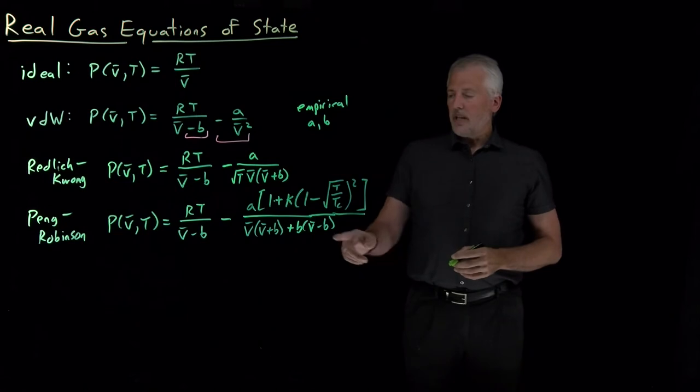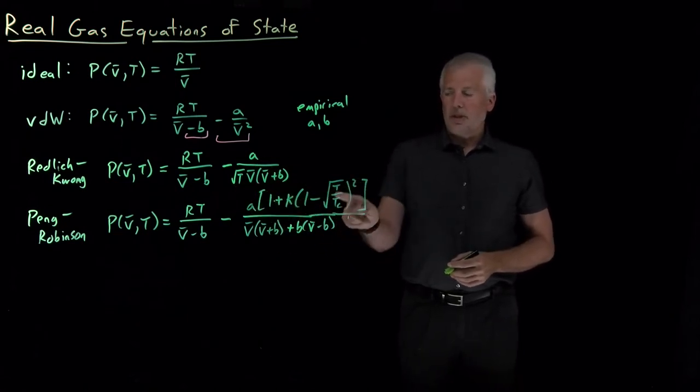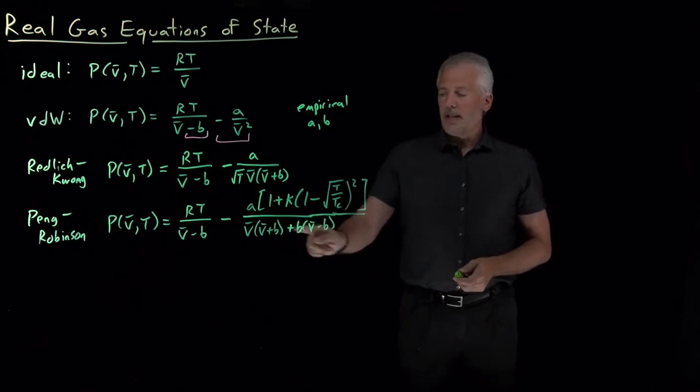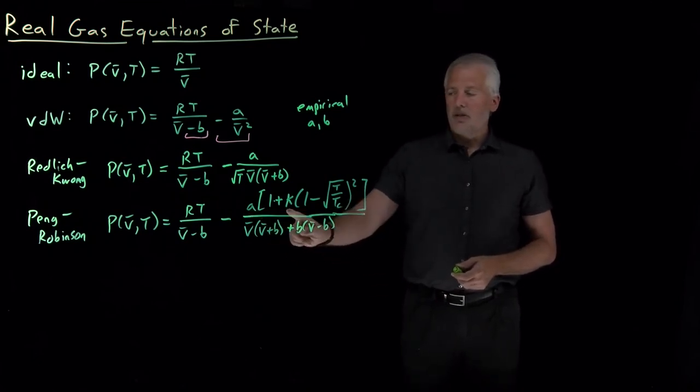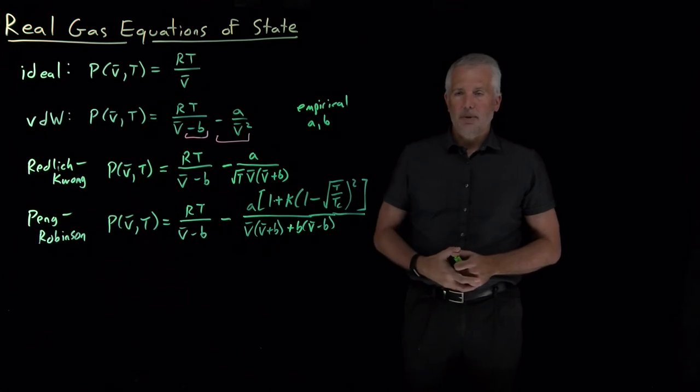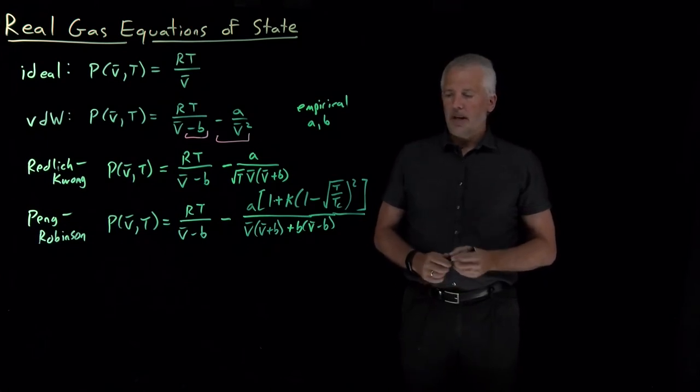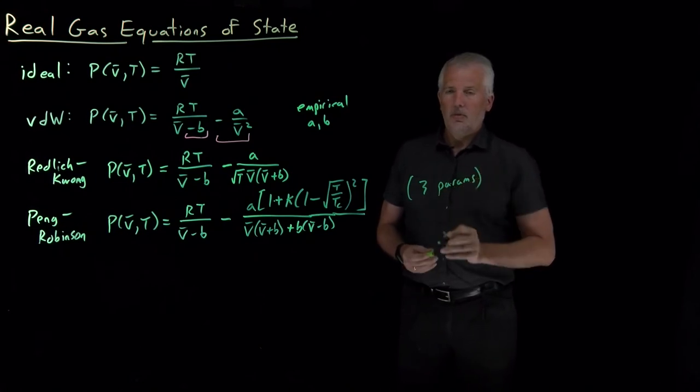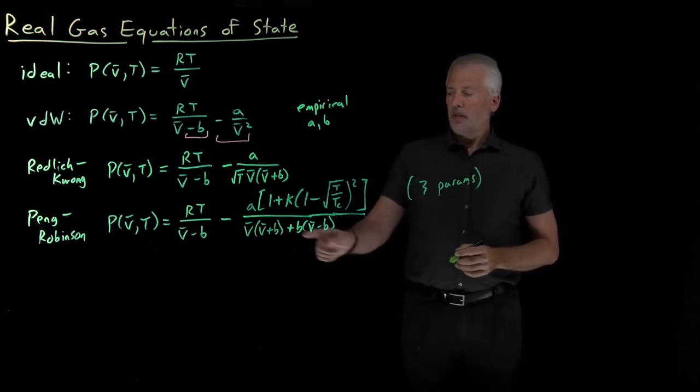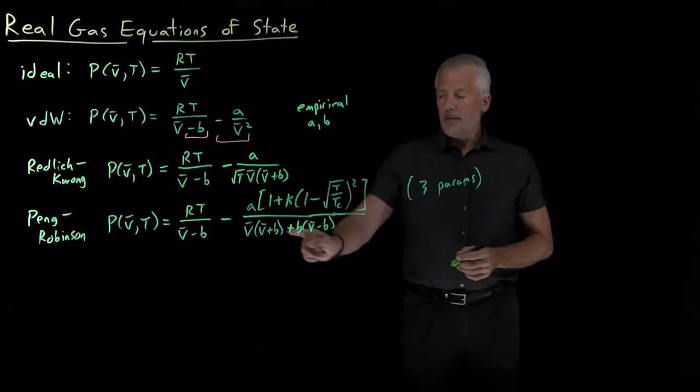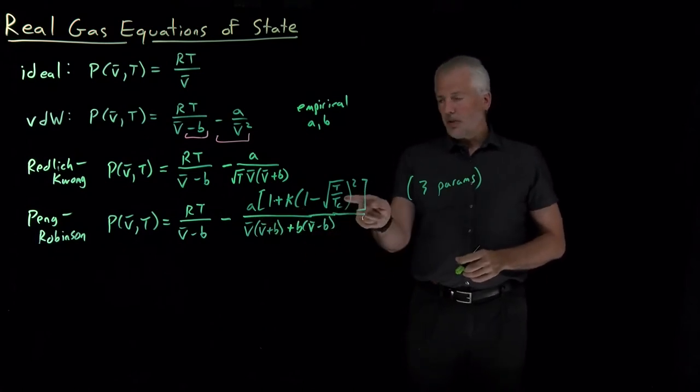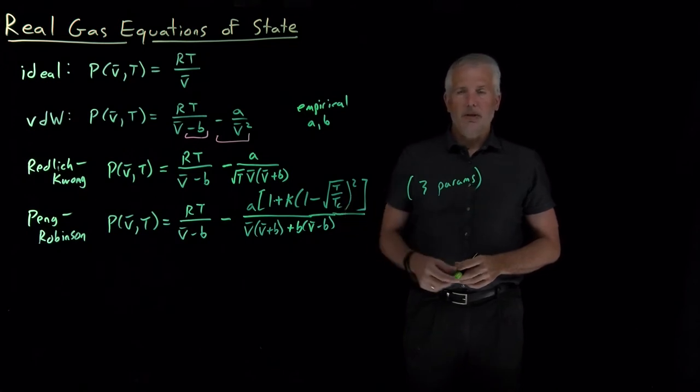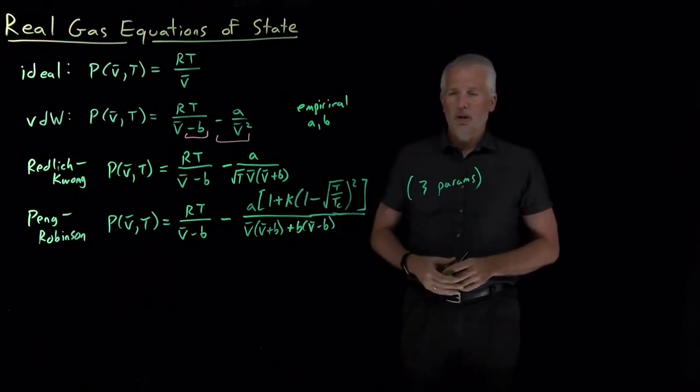So notice that the temperature dependence in this interaction term has been shifted up into the numerator. And now, not only do I have an A constant and a B constant that I need, but I also have this additional constant kappa. So now, I've got three parameters rather than just two, A and B and kappa. I've also got the temperature scaled relative to this other temperature, something that we haven't discussed yet called the critical temperature. So this equation has clearly gotten more complicated.